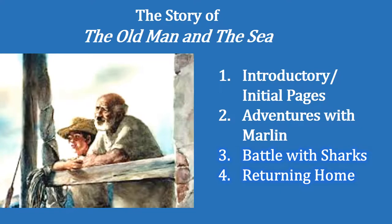Before going into the direct story, let's divide The Old Man and the Sea into four basic parts so that we can understand the events and the plot of this novella. The first part is the introductory part. The second part is Adventures with Marlin. The third part is Santiago's Battle with Sharks, and the last part is the Returning Home or the returning journey of Santiago.